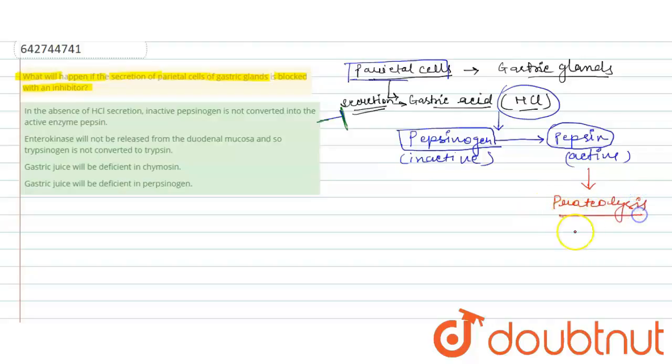So this process will not happen. Now let's come to our options and read the first option. In the absence of HCl secretion, inactive pepsinogen is not converted into active enzyme pepsin.